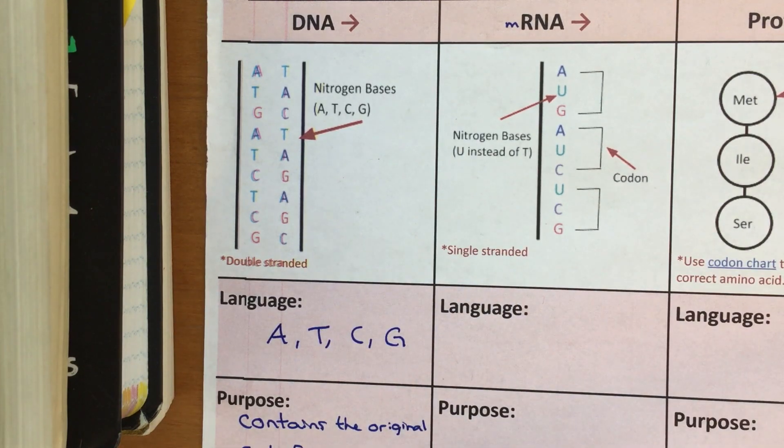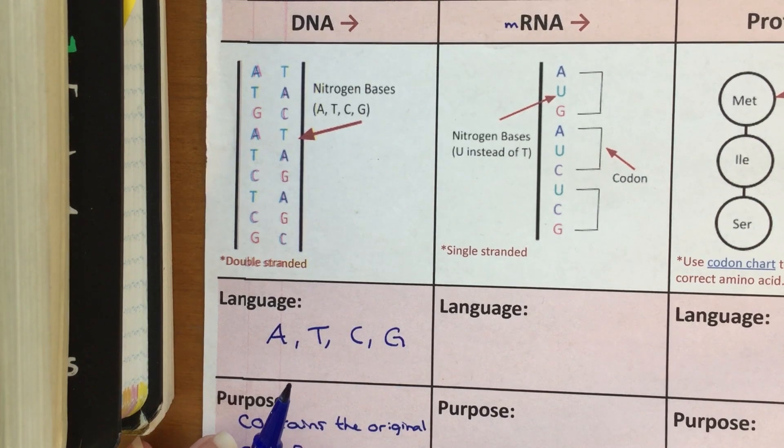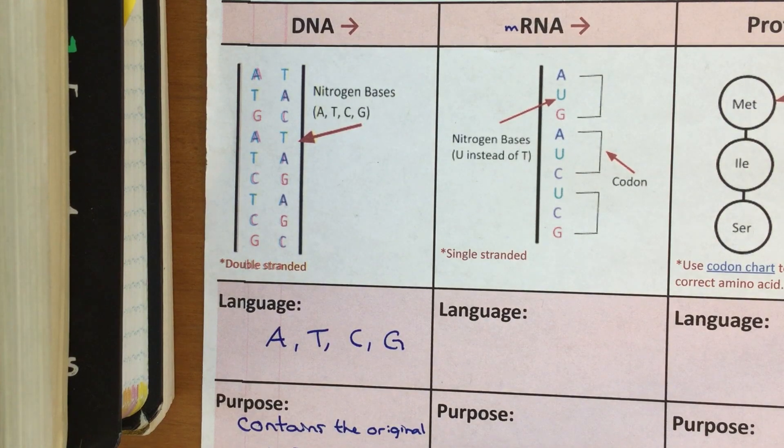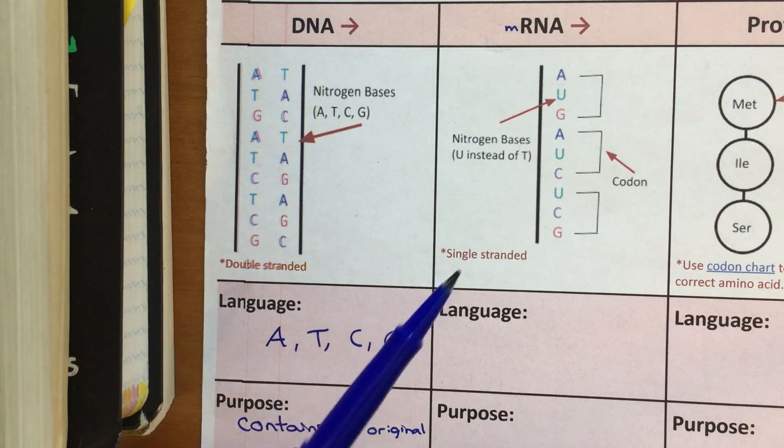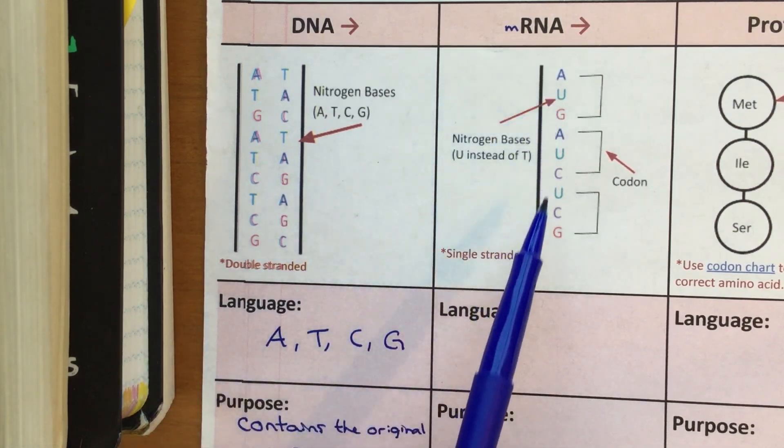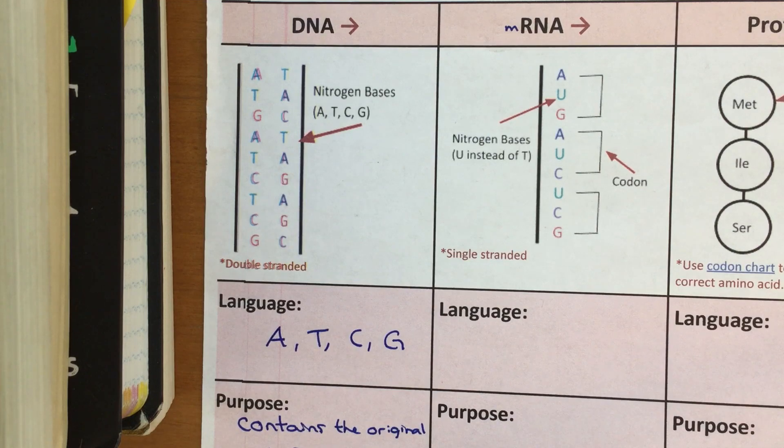One other difference that's not really on this paper but that is important to know is that RNA is a lot smaller than DNA. So in the human genome, you probably have about three billion nucleotides in your entire set of DNA for each human. But a set of RNA, messenger RNA, is only going to be about 500 to 1,000 of these letters in a row. It's going to be a lot shorter.